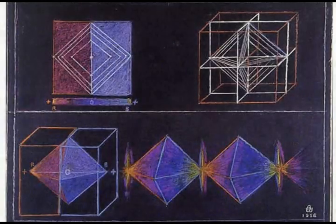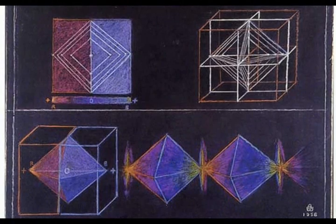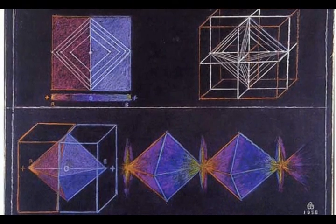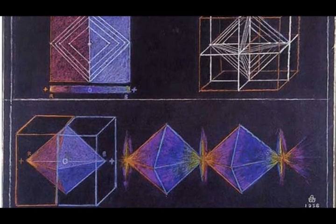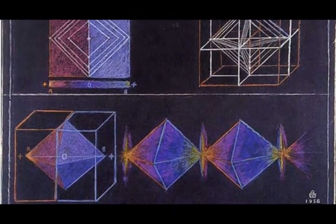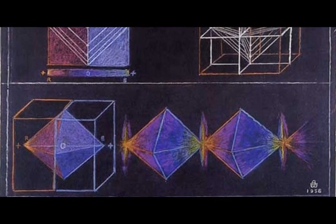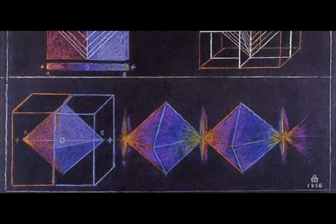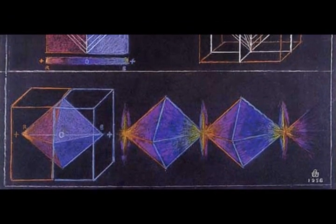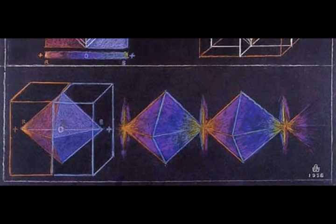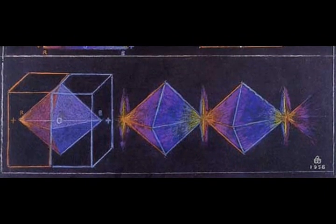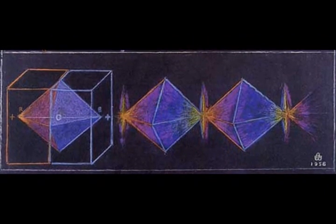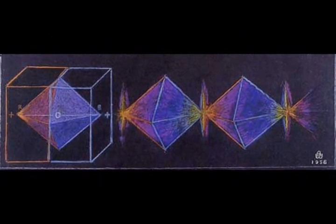Atomic centers are formed at the wave field boundaries of neighboring wave fields, where the cathode waves reaching out from the interior cathode planes of one cube meet to form anode centers of cubes which interpenetrate each other.